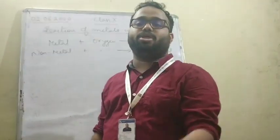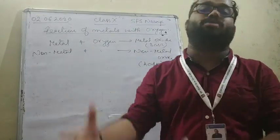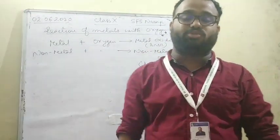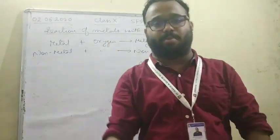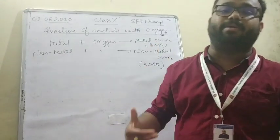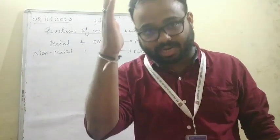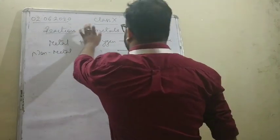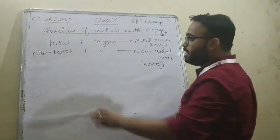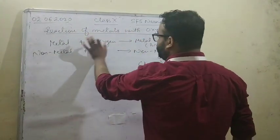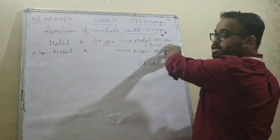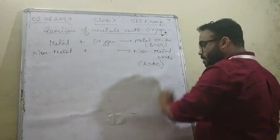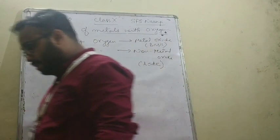Sonorosity is the property of the metal by which it produces sound — for example, school bells are made of metals which have the sonorous property. These are the properties of metals we discussed in the last class. Today we are discussing reaction of metals with oxygen. Metal plus oxygen gives you metal oxide, and non-metal plus oxygen gives you non-metal oxide.